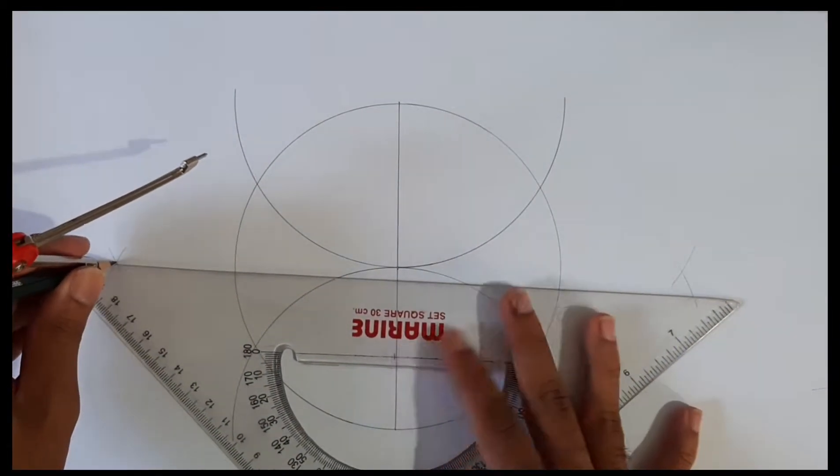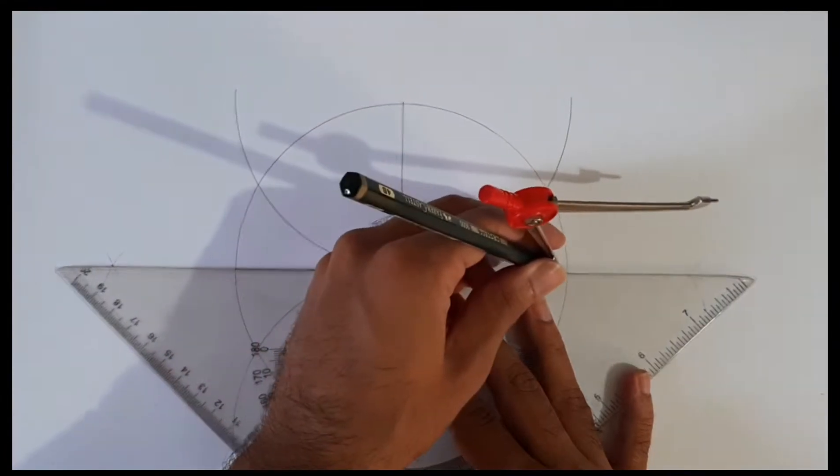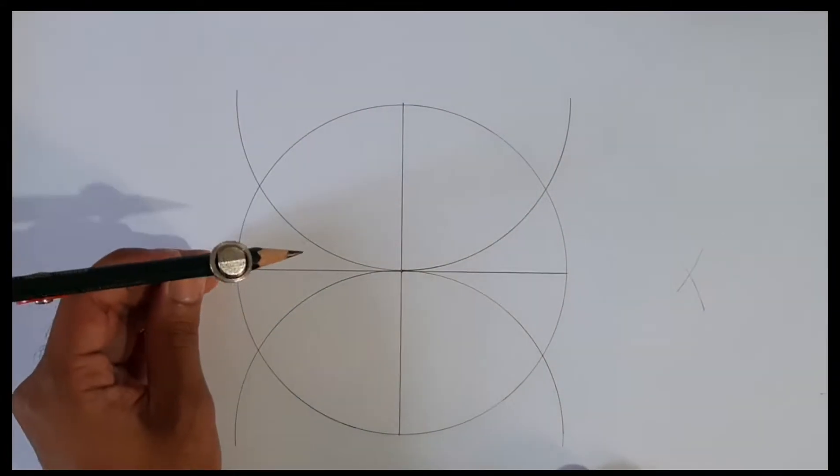Joining these two cuts will make a straight line passing through the center of the circle. Now the circle is divided into four equal parts.